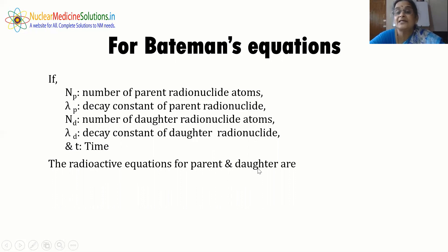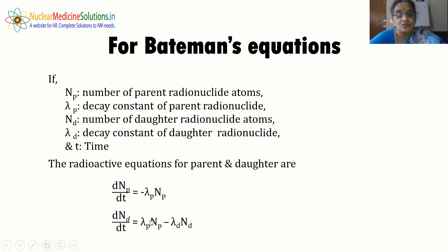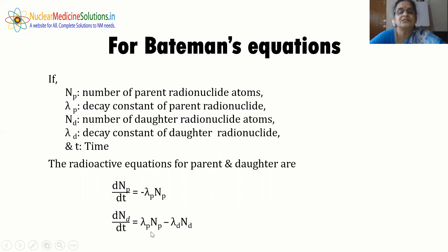The radioactive decay equation for the parent is dN_P/dt = −λ_P·N_P, where the minus sign indicates the parent is only decaying. For the daughter radionuclide, there is a growth term λ_P·N_P corresponding to decay of the parent, and a reduction due to its own decay, −λ_D·N_D. So the net equation is dN_D/dt = λ_P·N_P − λ_D·N_D.